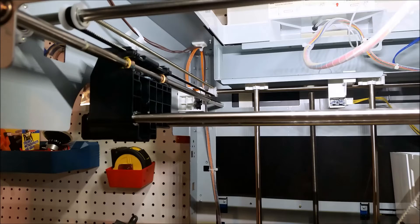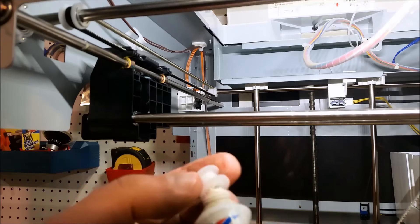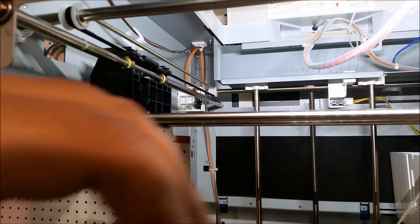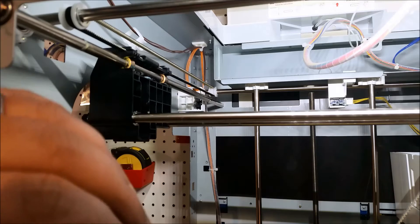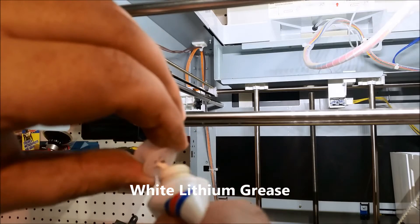So basically this is the wheel in there. And basically what I'm going to do is I'm just going to take a little bit of white lithium grease and just put a little bit on the ends. You only want to get it on the ends.